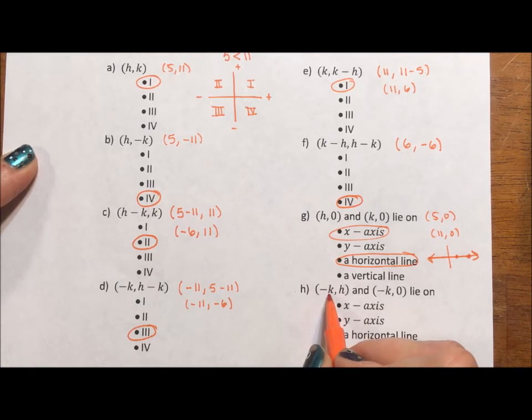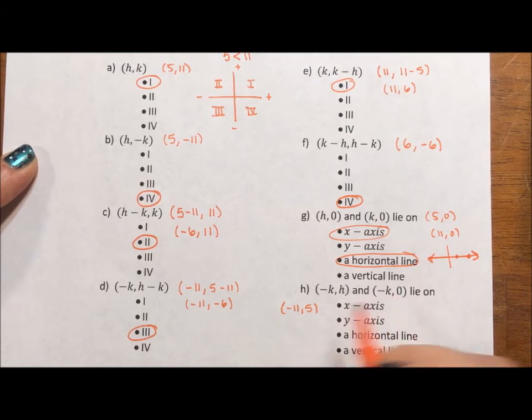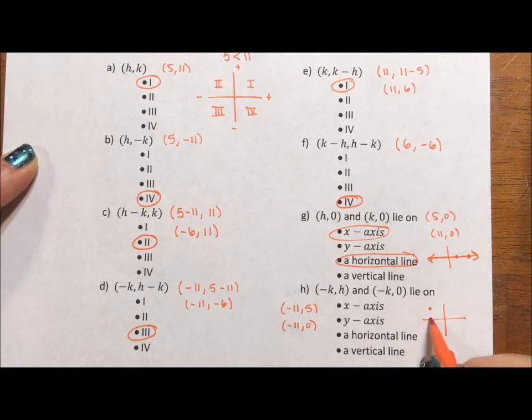Let's see, negative k, h, so that's going to be negative 11, 5 and negative k, 0. That's negative 11, 0. If I plot those, I have negative 11, 5, negative 11, 0. This is a vertical line.